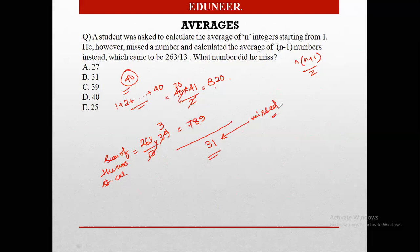Do you understand? He was supposed to find the average of 40 natural numbers. He said that he forgot one number and took the average of 39 numbers. So 39 into the average equals the sum of the 39 numbers. Now the sum of the 40 terms minus sum of 39 terms should give me the missed number. So the missed number is 31 and your option is B. B is the correct answer.